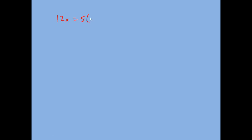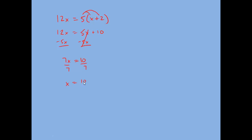So, 12x equals 5 times (x plus 2). Now you solve as normal. Distribute through: 12x equals 5x plus 10. Subtract 5x from both sides to get the x's on one side: 12x minus 5x gives us 7x equals 10. Divide both sides by 7, and we get x equals 10 over 7. If you divide 10 by 7 on your calculator and round to one decimal place, we get x equals 1.4 hours. So Tony will catch Mike after 1.4 hours.